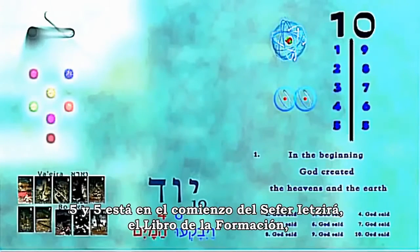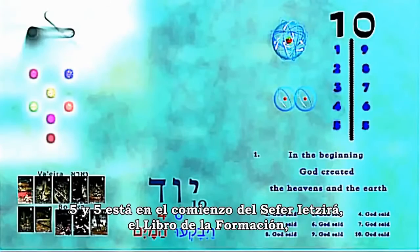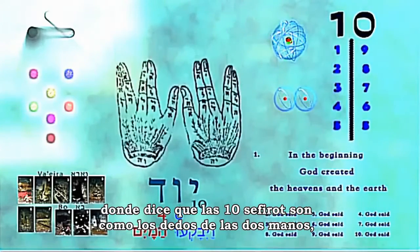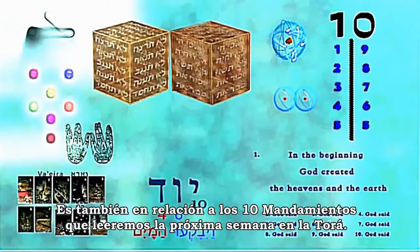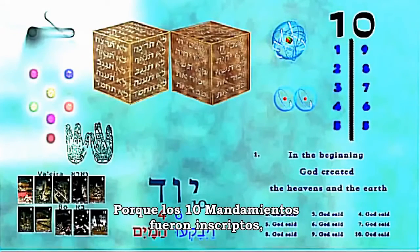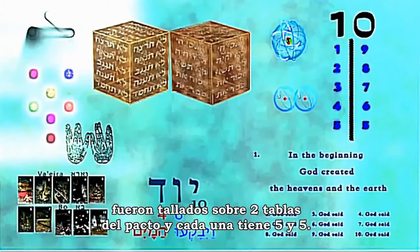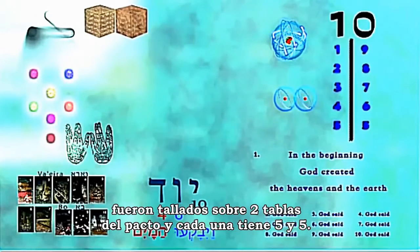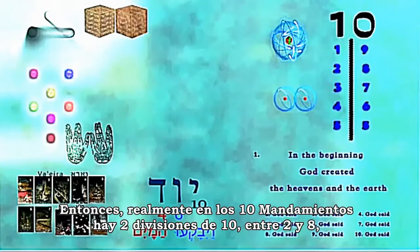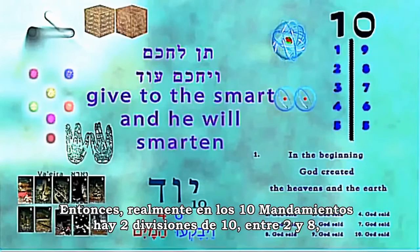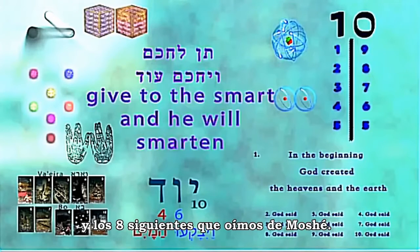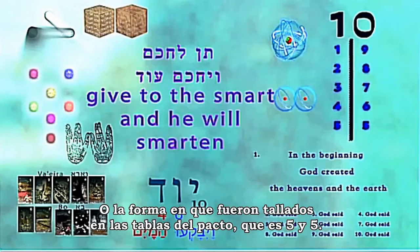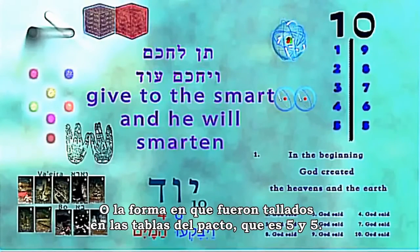Five and five: as it begins in the Sefer Yetzirah, the Book of Formation, it says that the ten Sfirot are just like the fingers of the two hands — five versus five. It's also like the two tablets of the Ten Commandments that we're going to read about next week. The Ten Commandments were engraved upon two tablets of the covenant, and each tablet had five and five. So in the Ten Commandments there are two divisions of ten: either into two and eight — the two commandments heard directly from God and the eight from Moshe — or five and five, the way they were engraved on the two tablets.